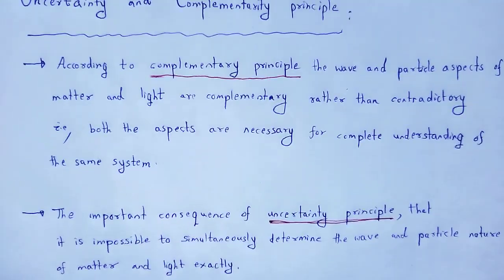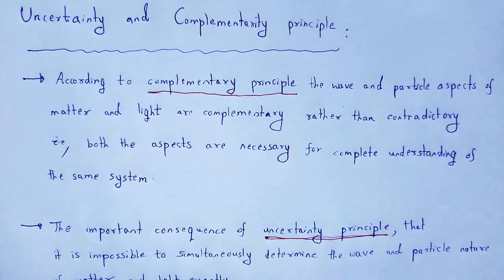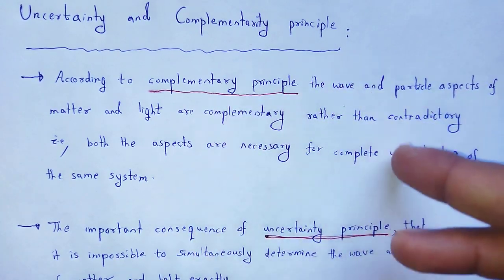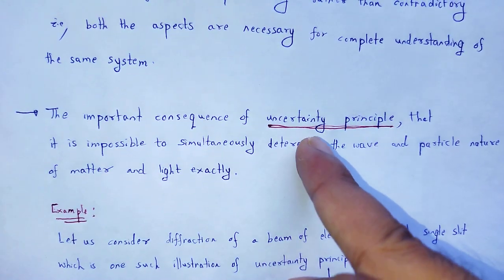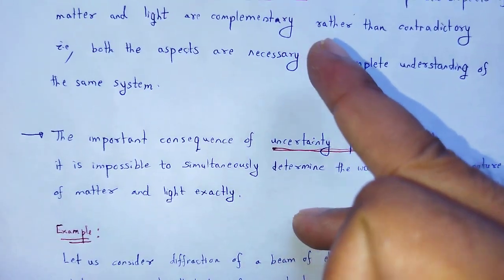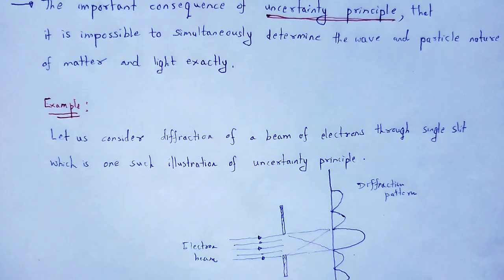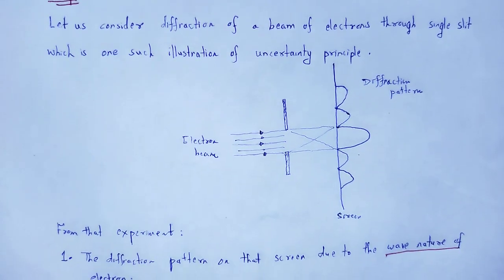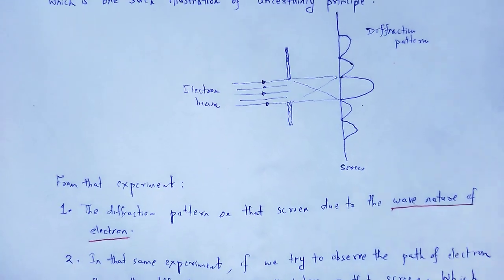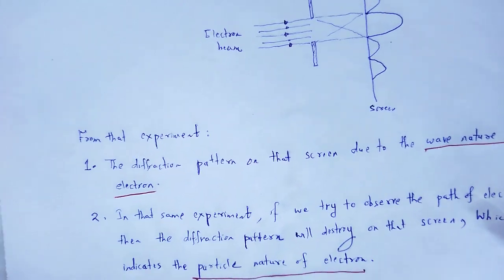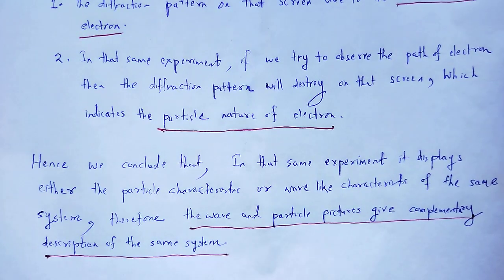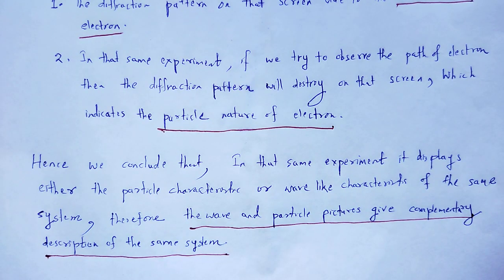With the help of this video lecture, we understand the concept of uncertainty and complementarity principle — what the uncertainty principle is, what the complementarity principle is, and how the uncertainty principle is related to the complementarity principle. By using the example of diffraction of a beam of electrons through a single slit, we confirmed how the wave and particle pictures give complementary descriptions of a particular system. With this useful and informative discussion, let me wind up the session. Thank you.